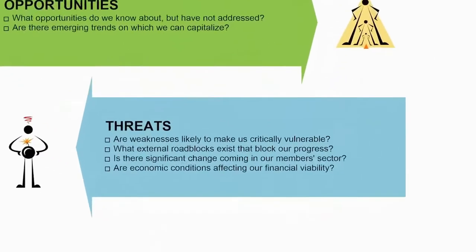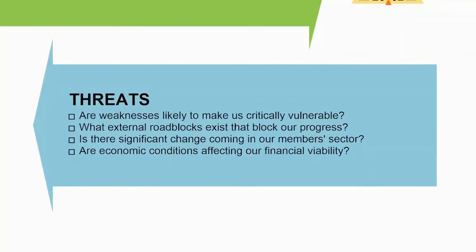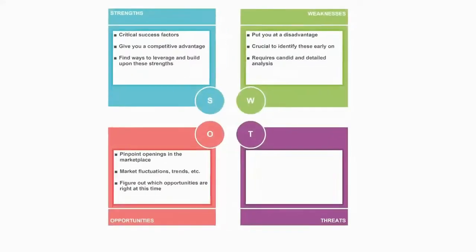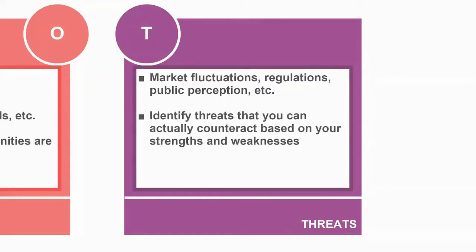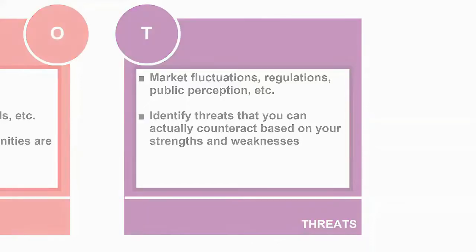And now, we will try to figure out how to respond to threats to your business. Market fluctuations, government regulation, or public perception are all external factors that may affect your business in a negative way. By identifying any threats and finding ways to lessen or eliminate them, you are clearing the way for smoother sailing. As with opportunities, you need to consider your strengths and weaknesses when assessing threats.